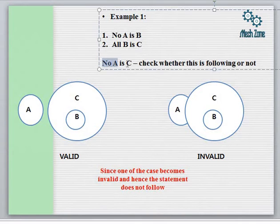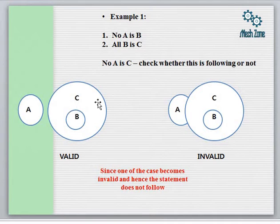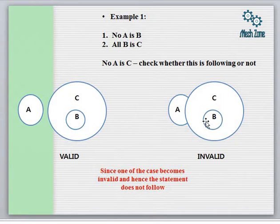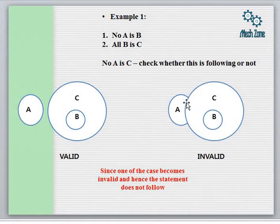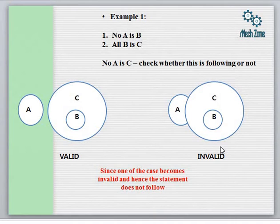The conclusion given is No A is C. No A is C is valid in one diagram, but there is one more possibility. A and B are definitely two separate identities having nothing in common, but A can have something in common with C, because the statements never tell us that A and C cannot be common. So we form all possible cases, and in one case No A is C is invalid, because A and C can have a common portion in the Venn diagram. If the conclusion is invalid in even one case, it becomes invalid for the entire situation.